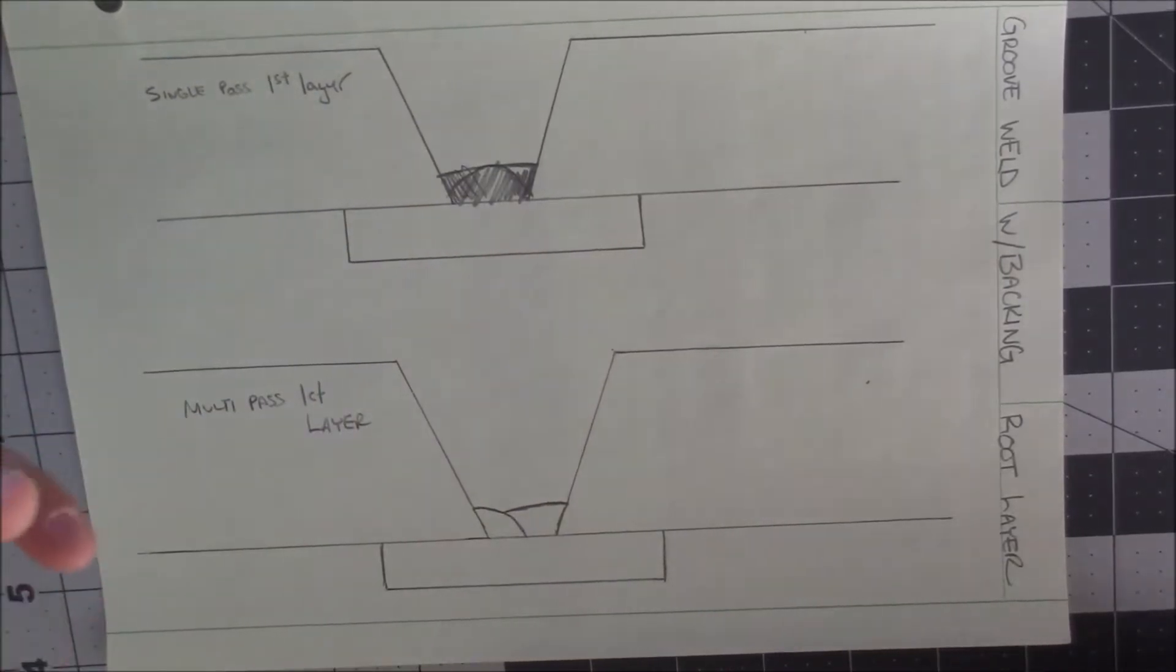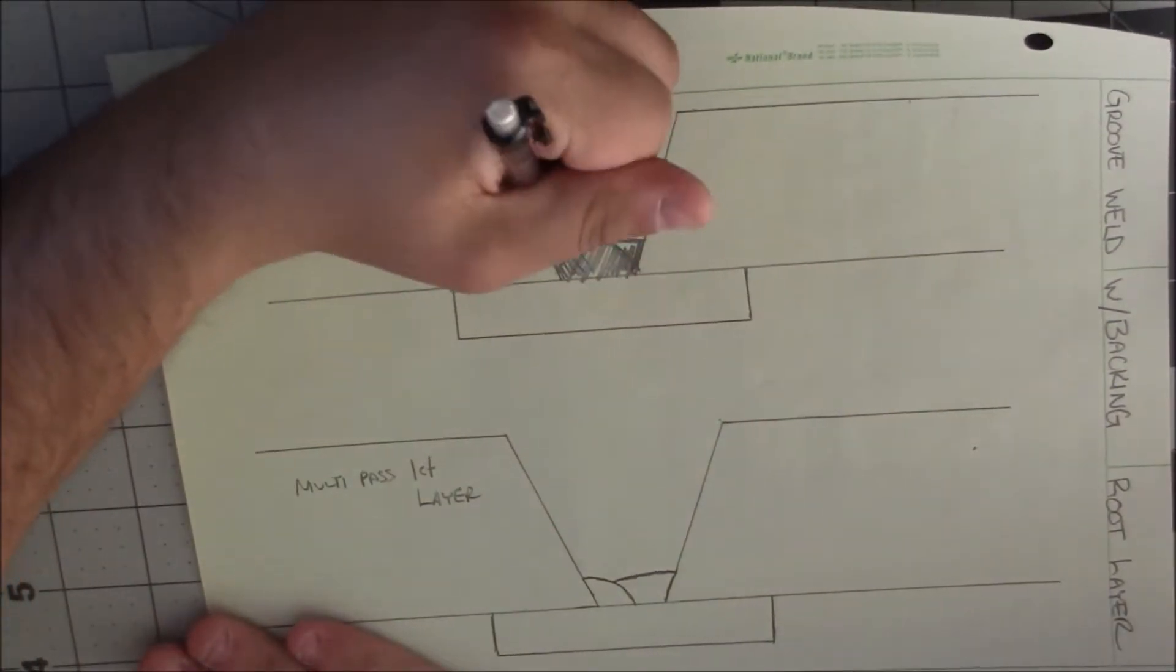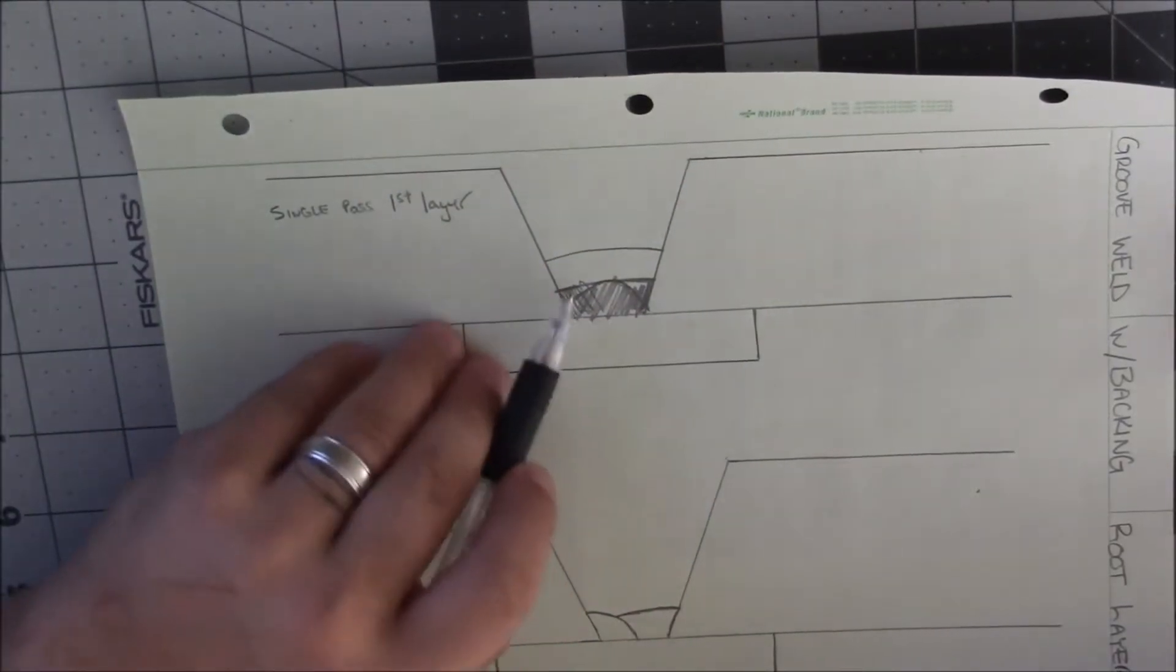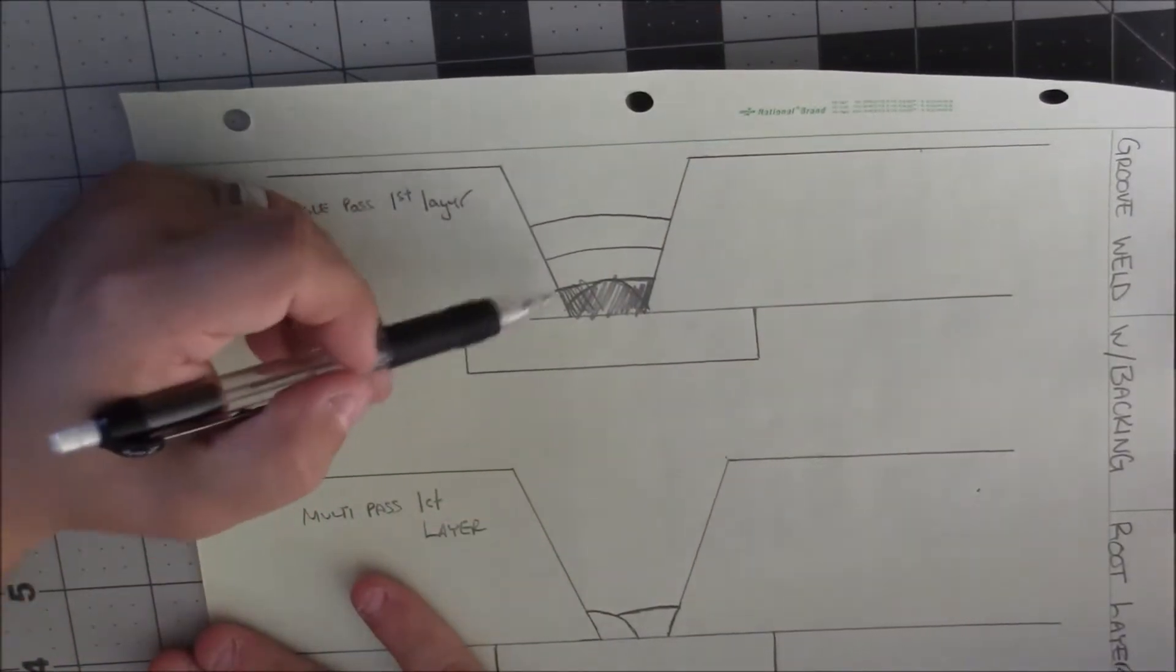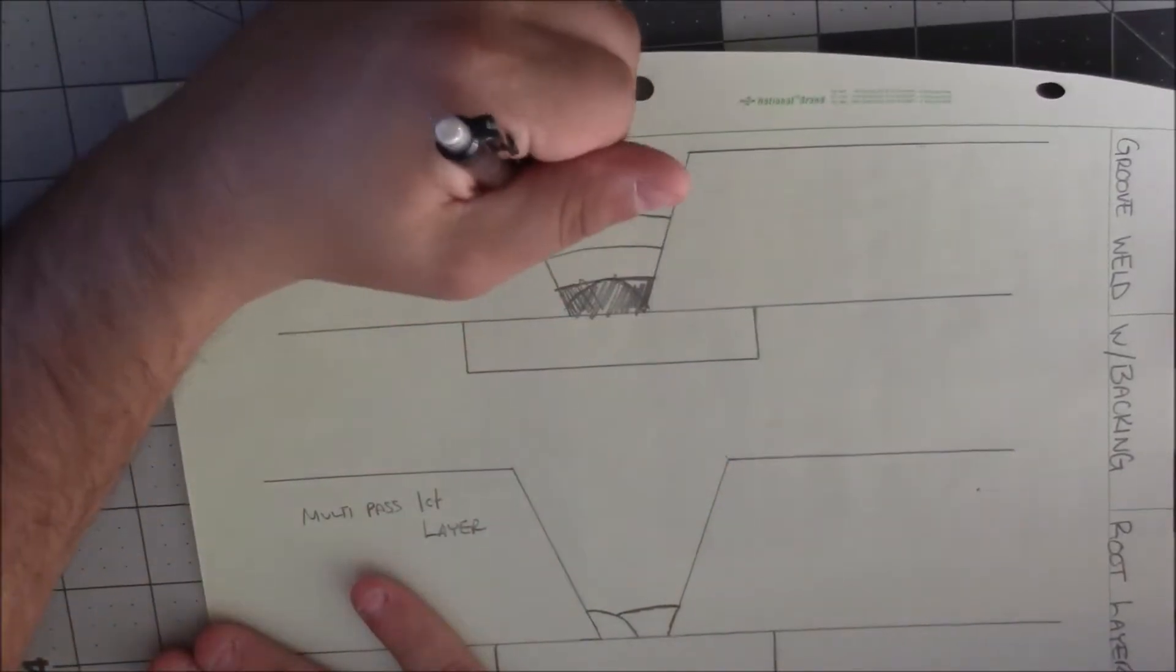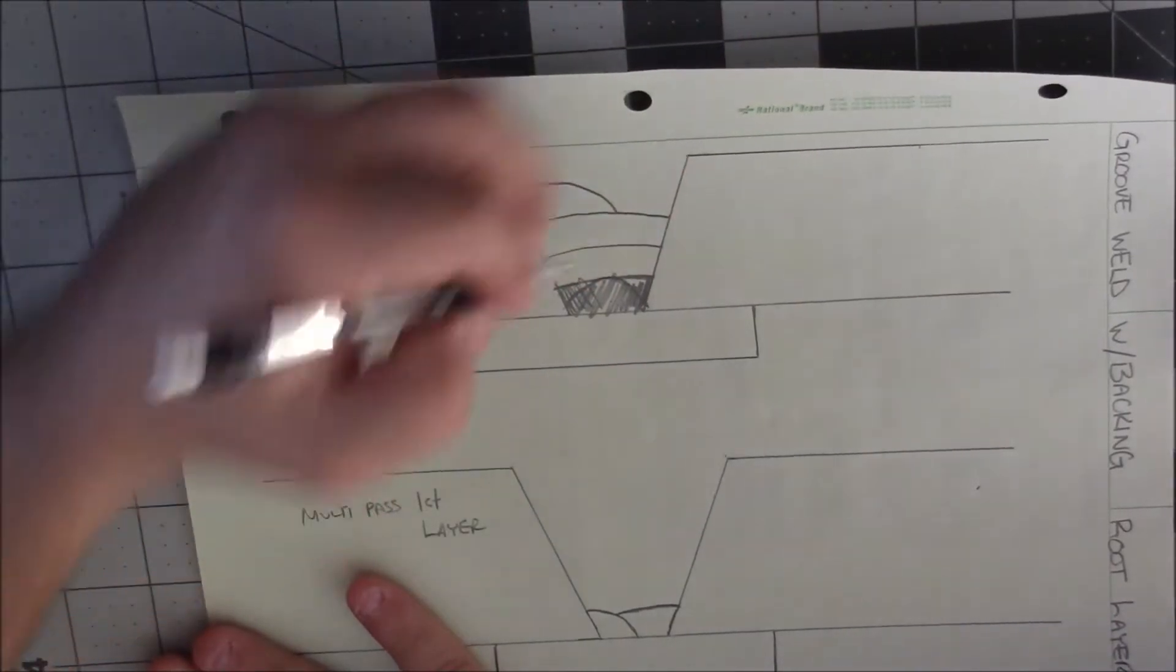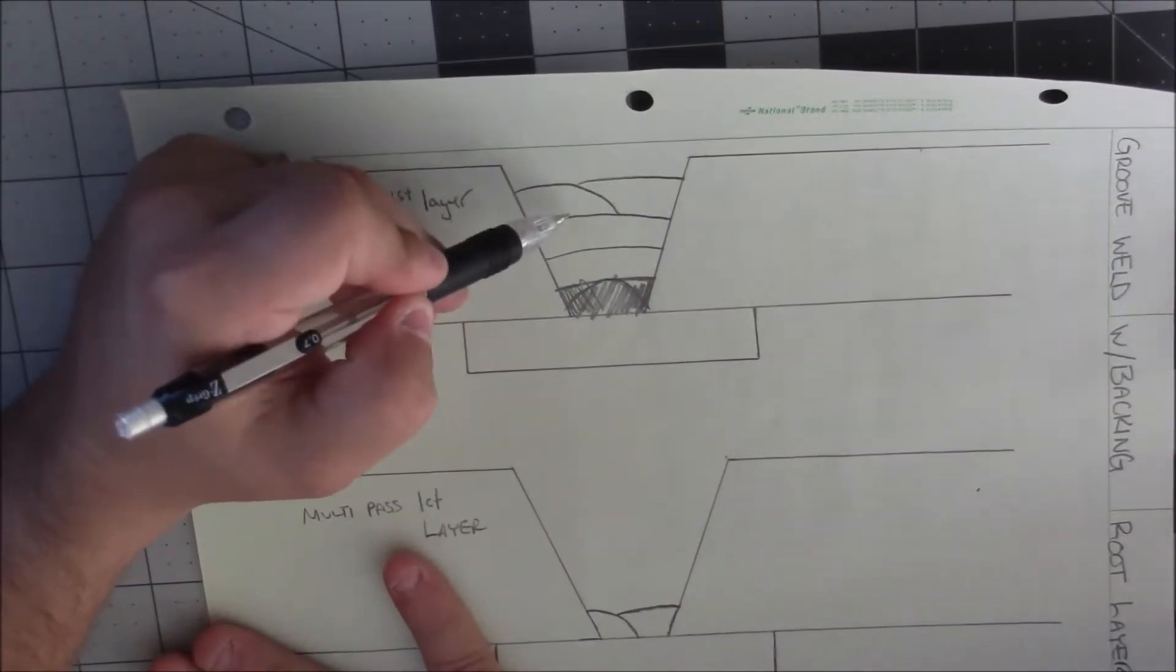I'm also just going to use this one to talk about different layer passes and layers. Say you're weaving. You got your root pass, your root layer, your hot layer, maybe your first fill layer works out as a weave. Now you're starting to get a little wide and you can't keep that puddle controlled where you want it. What you do now is you can still do like a weave but you're not going to the extent of your joint.